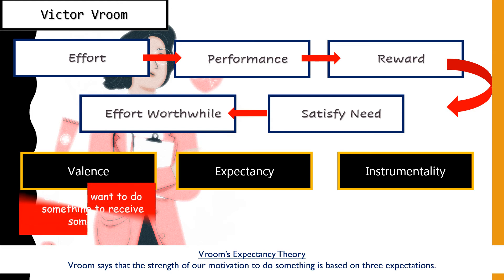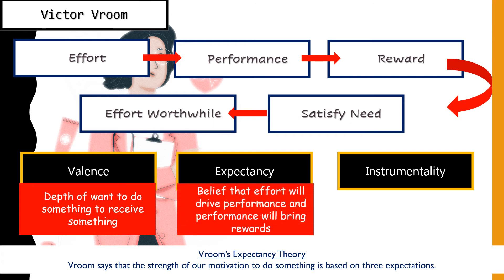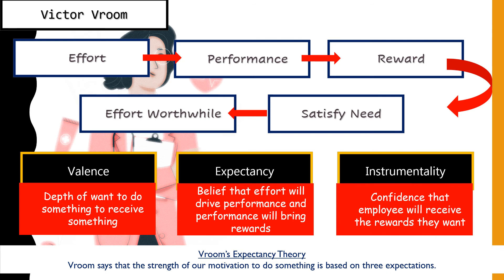The three expectations are valence, expectancy, and instrumentality. Valence refers to the depth of want — how much you want to achieve something to receive something in return. If you have a high depth of want, you also need to believe that your effort will drive performance and that performance will bring rewards.